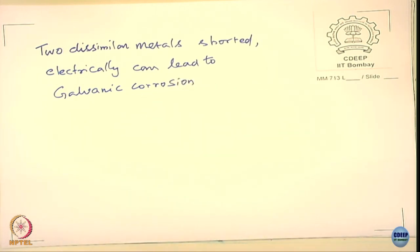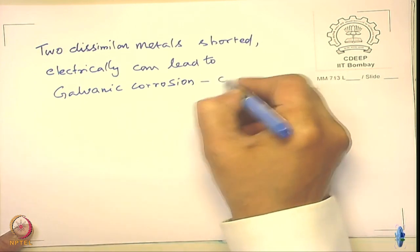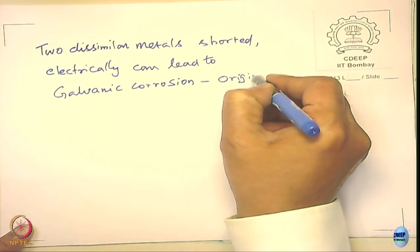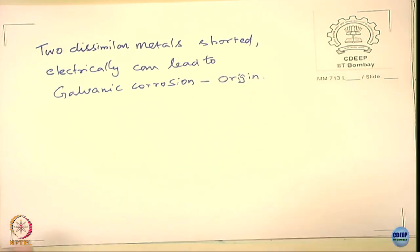The origin of galvanic corrosion comes from a device most of us use constructively — dry cell batteries — where galvanic corrosion works for our benefit.